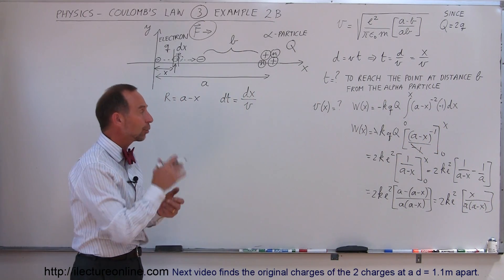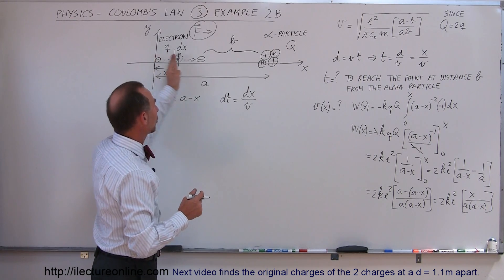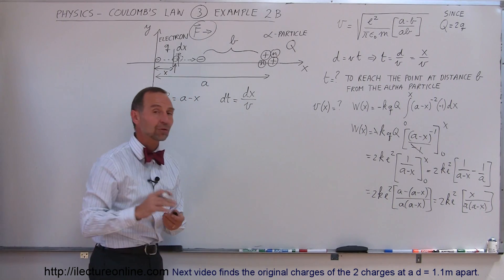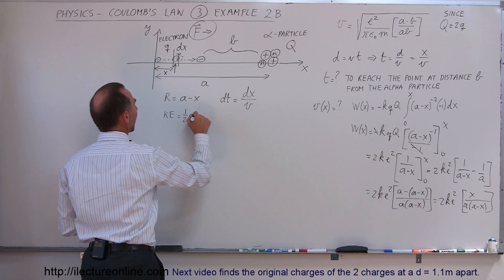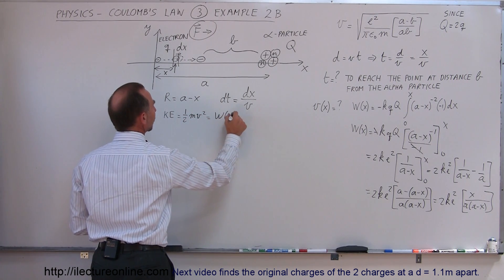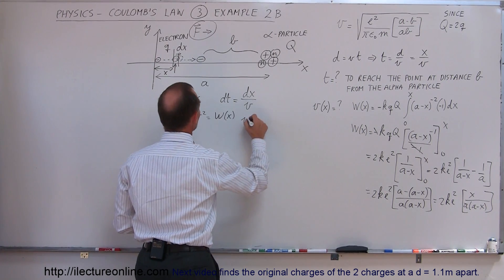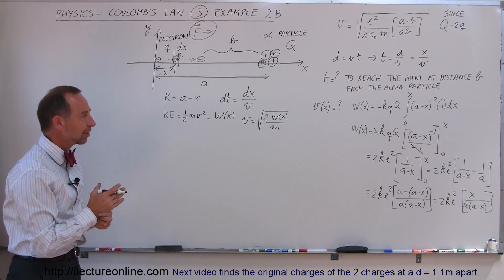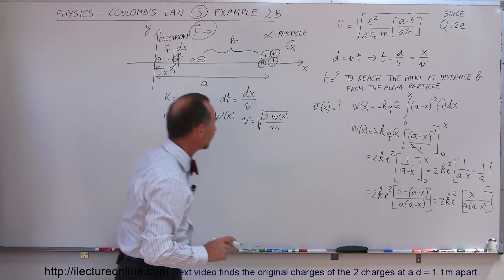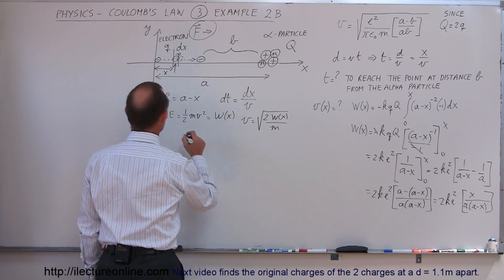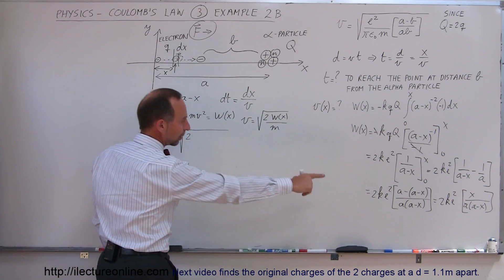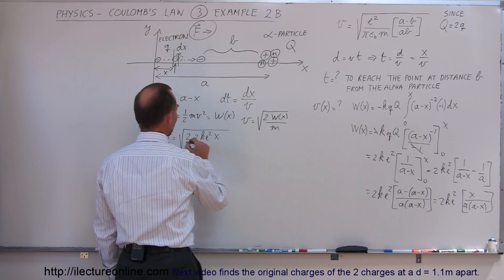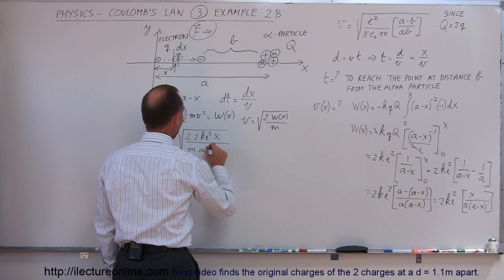We have recalculated the work done to get an electron from here to any position x closer to the alpha particle. Now we can use that to find the velocity as a function of x, because kinetic energy equals one-half mv², which equals the work done as a function of x. That means velocity equals the square root of 2 times the work done as a function of x, divided by the mass of the electron. Plugging in the work: velocity equals the square root of 2 times 2ke² times x, divided by the mass times a times (a minus x).